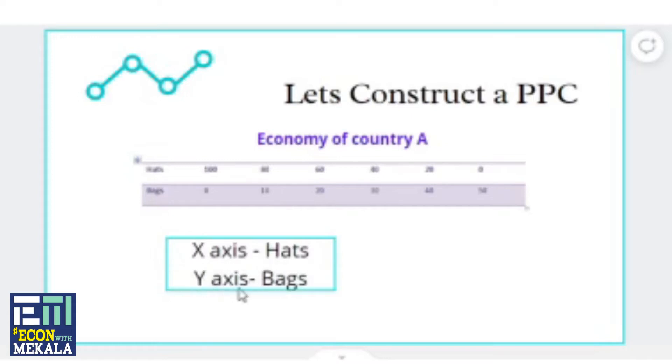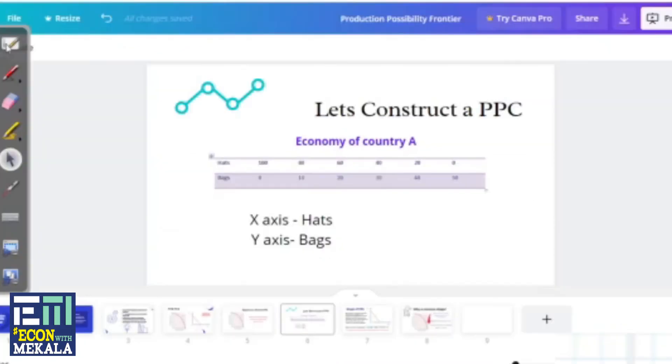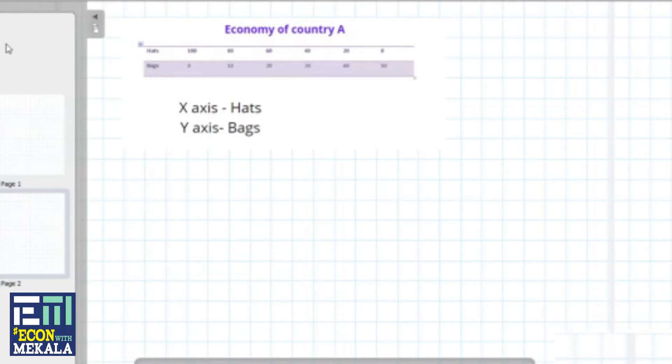I have given my preferences. I'm going to take hats for the x-axis and bags for the y-axis. Let's have a look at how to construct a PPF. I have given an example here. I have chosen a country called Country A and I have chosen two different goods this country is producing: hats and bags.